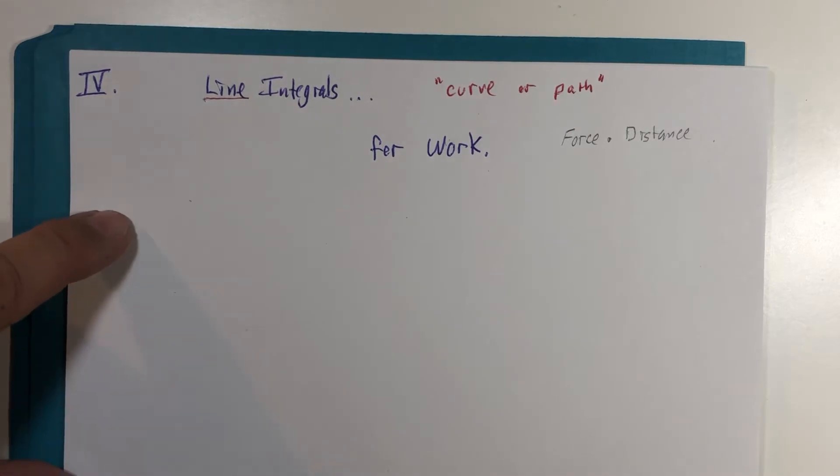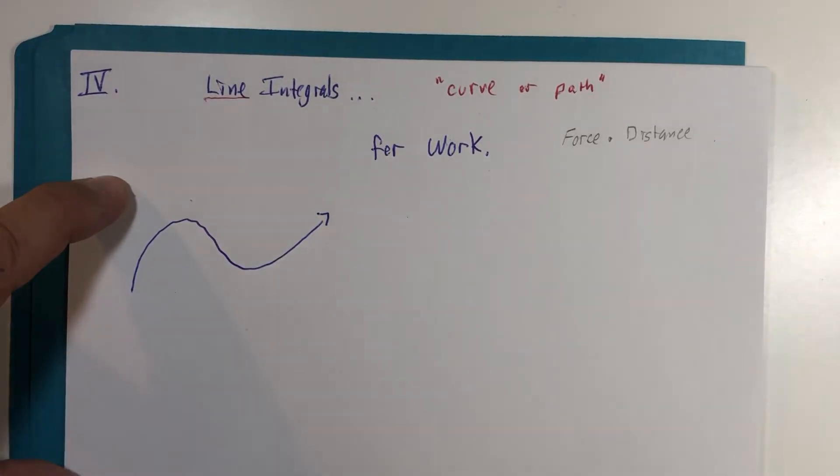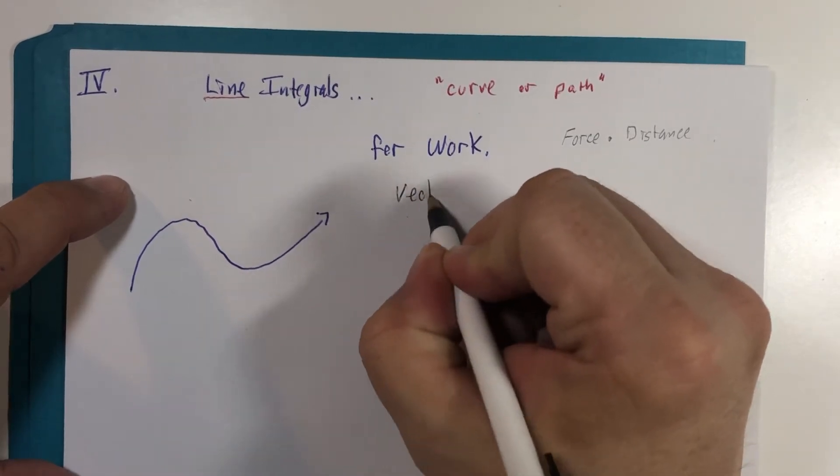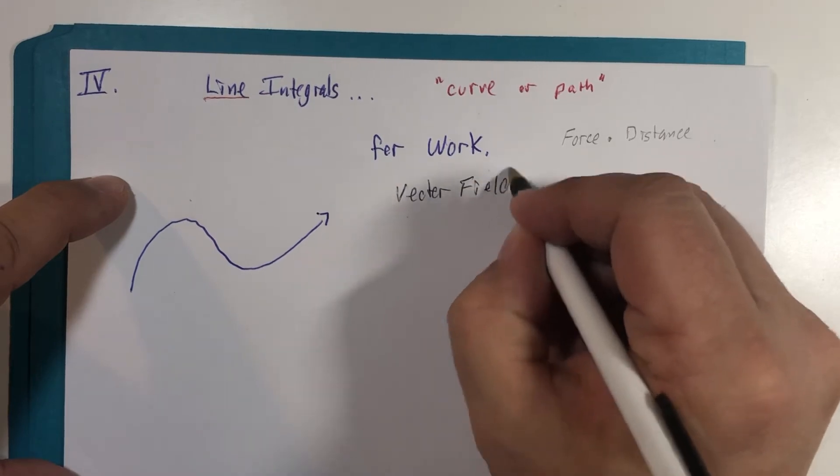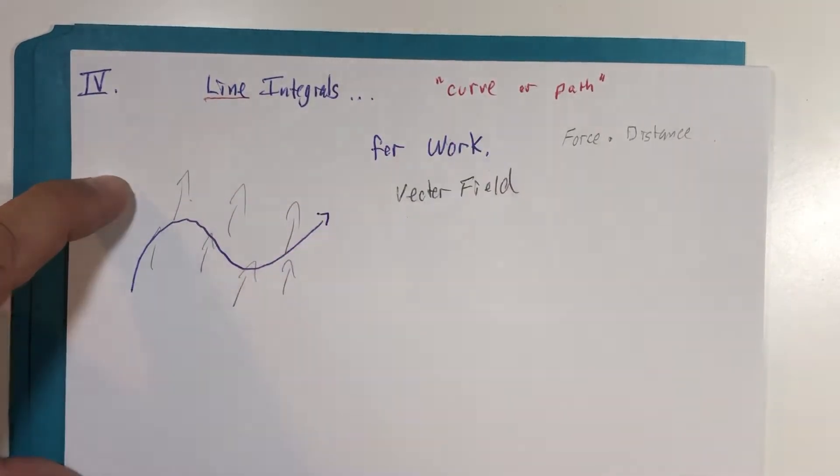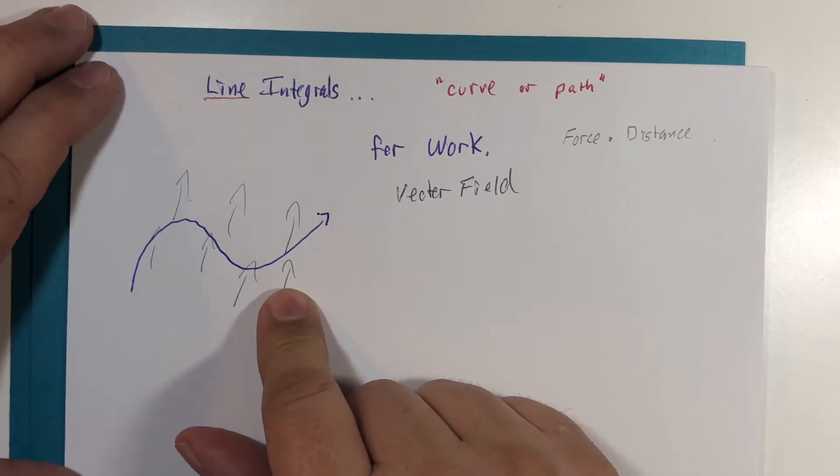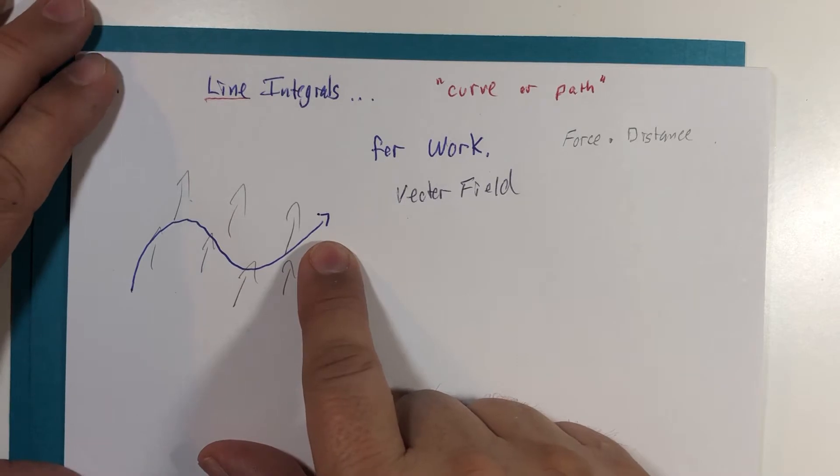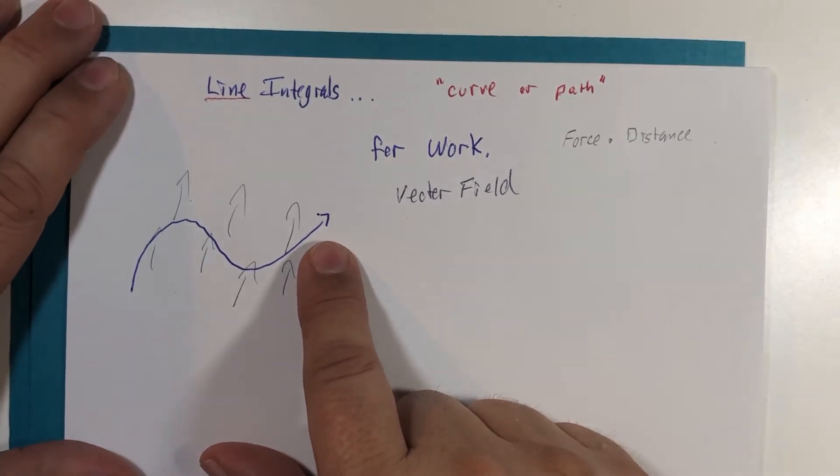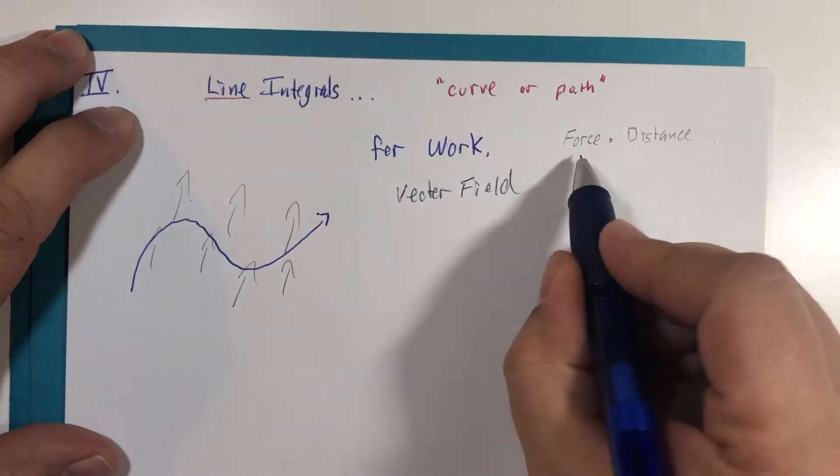So imagine we have a path and there is a vector field that this path goes through. Perhaps think of it as a sailboat, and this would represent wind. What we're going to try to calculate is how much work is done by this vector field for a point moving along this path. That sounds like something well beyond our reach without any tools. But I'm going to simplify it down to just show you how vector tools that we do have can help us get to the simple calculation of force times distance.